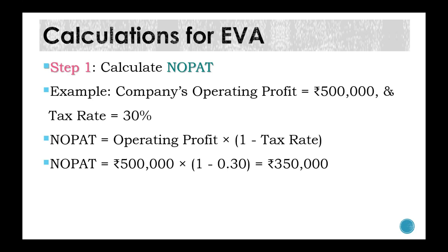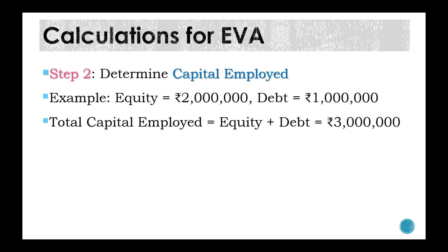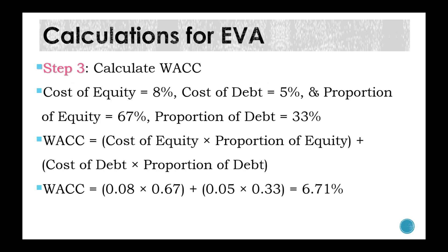To calculate capital employed: if the company raised ₹20 lakhs through equity and ₹10 lakhs through debt, the total capital employed is ₹30 lakhs. To calculate WACC: with cost of equity at 8%, cost of debt at 5%, equity proportion at 67%, and debt proportion at 33%, WACC = (Cost of Equity × Proportion of Equity) + (Cost of Debt × Proportion of Debt). Substituting these values gives a WACC of 6.7%, which is the cost of capital representing the financial burden on the organization.